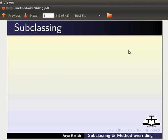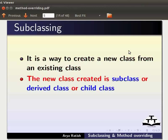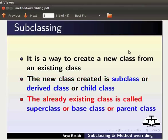First of all, we will learn what subclassing is. It is a way to create a new class from an existing class. The new class created is called a subclass, derived class, or child class. The already existing class is called the superclass, baseclass, or parentclass.